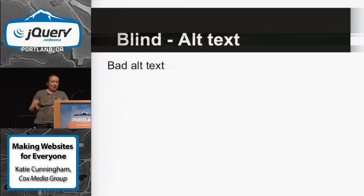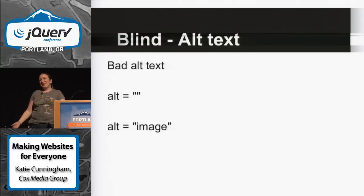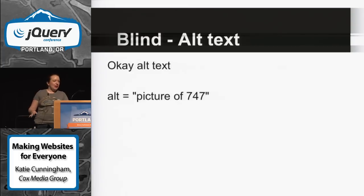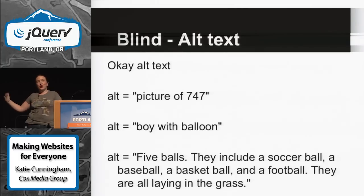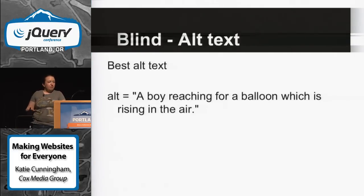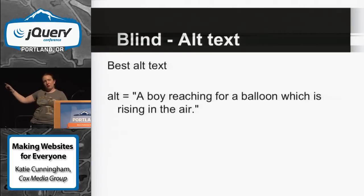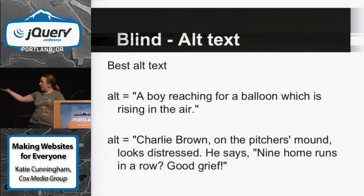Some alt text examples. Bad: nothing, or just saying 'image' — then it'll read 'image, image.' Or just 'map' — we know what it is, but not why you have it. Okay examples: 'picture of a 747' — you don't need to say 'picture of'; they know it's a picture. 'A boy with balloon' may be okay. Going overboard with description isn't needed. Good alt text: if you're doing an article on helium and have a boy reaching for a floating balloon, that's the right level — it explains enough without going overboard. It gets the point across.